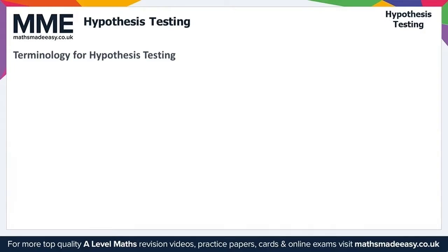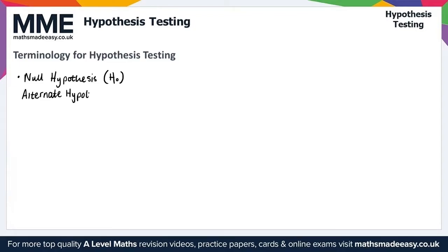Hypothesis tests are based on two hypotheses. The null hypothesis, which we denote as H0. H0 is a statement about the value of a population parameter, i.e. a parameter of the distribution of a random variable, which our data will tell us whether or not to reject.